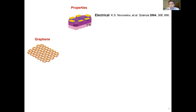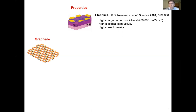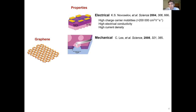Follow-up measurements by Geim and other groups showed that graphene has very high carrier mobilities — basically a measure of how fast charge carriers move in the material. Numbers like over 200,000 cm² per volt-second are extraordinary. This gives very high conductivity, comparable to the best metals like copper or silver, and graphene can also withstand very high current densities.